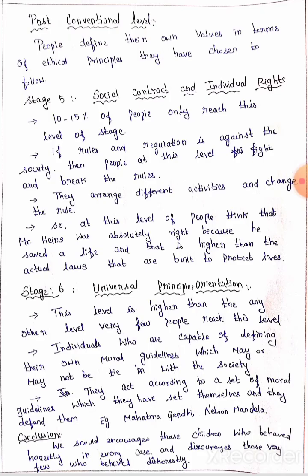The last stage is Stage 6: universal ethical principle orientation. This is the highest level, higher than any other level. Very few people only reach this level — for example, Mahatma Gandhi and Nelson Mandela have reached this stage. Individuals at this stage are capable of defining their own moral guidelines, which may or may not be tied with society. They act according to a set of moral guidelines they have set themselves and defend them.